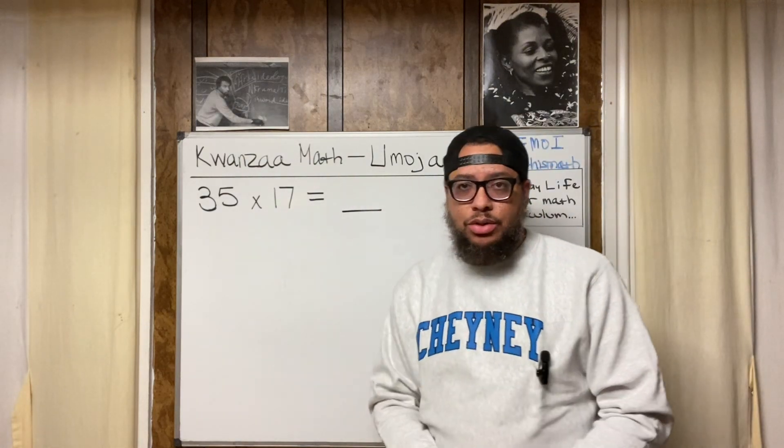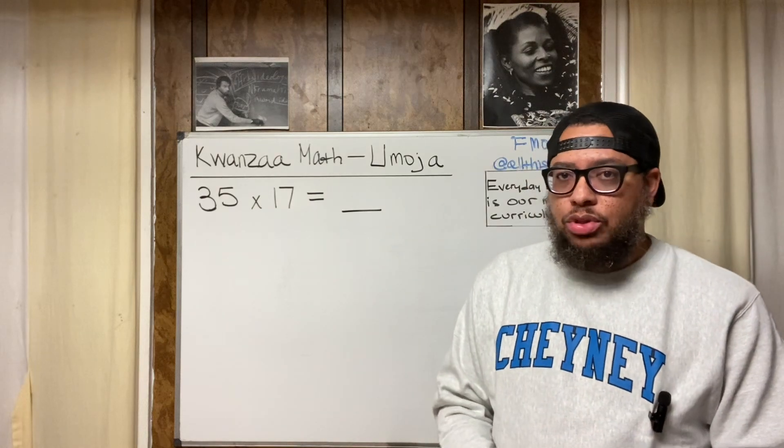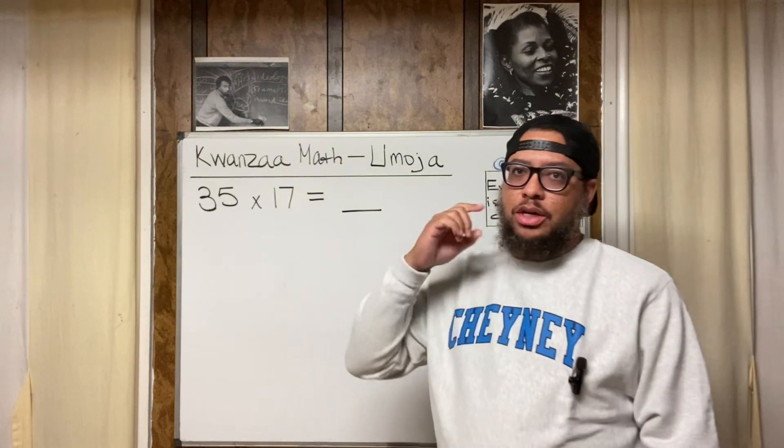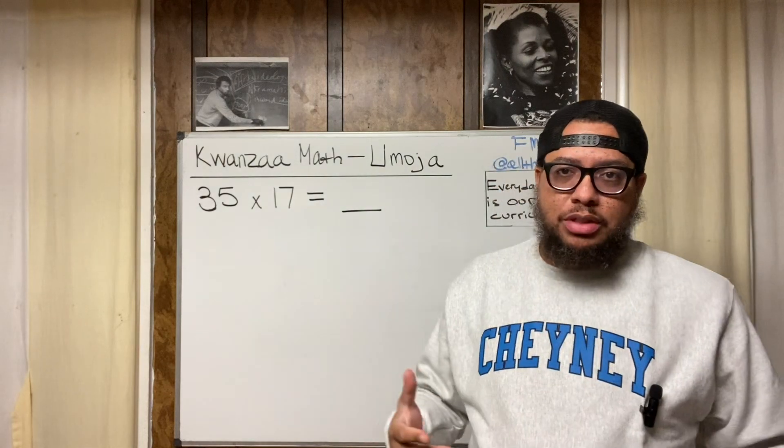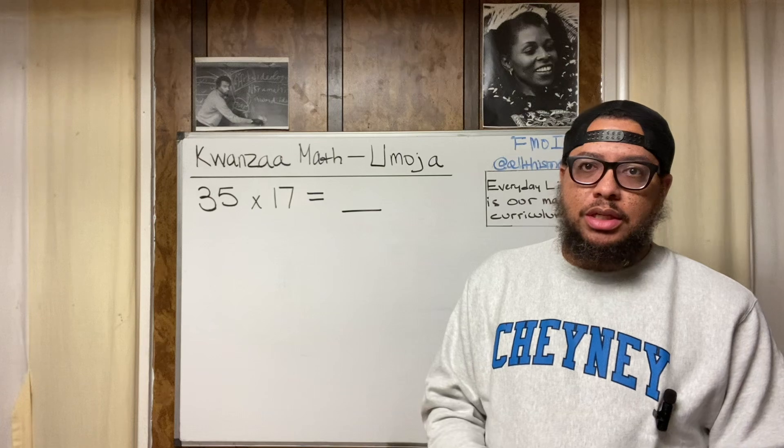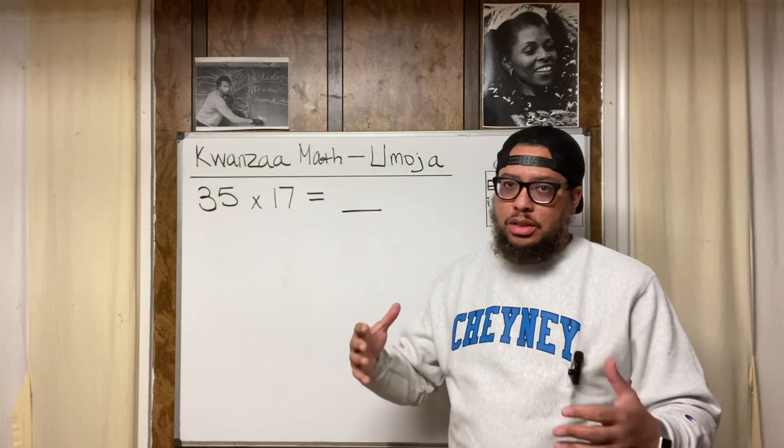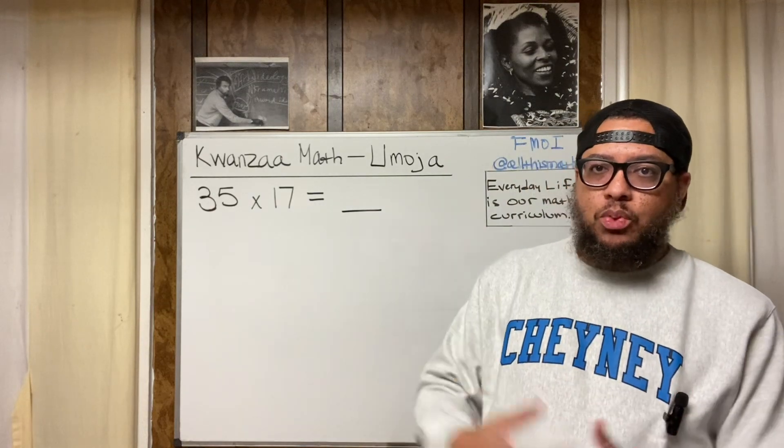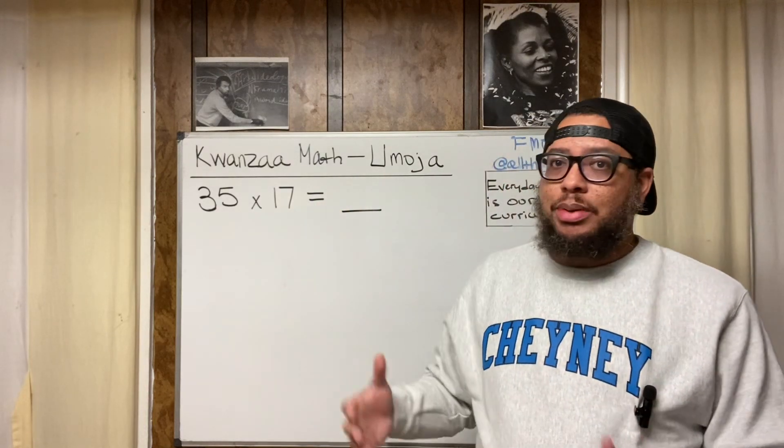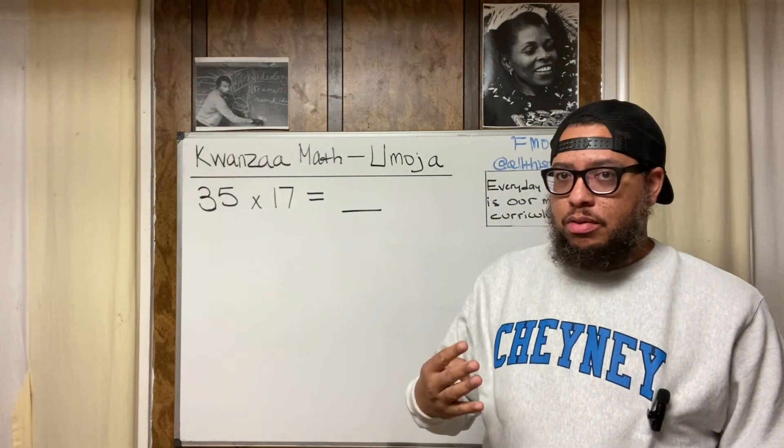Now, what are we about to get into? We are about to get into some Kwanzaa math. Today is the first day of Kwanzaa, and in the Nguzo Saba, or according to Nguzo Saba, the first day of Kwanzaa is what we know as Umoja. Umoja is the Kiswahili word for unity. We are coming together as one. So what I figured I would do is do a multiplication problem, but do a multiplication problem in four different ways.